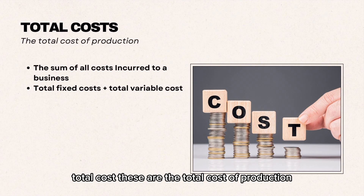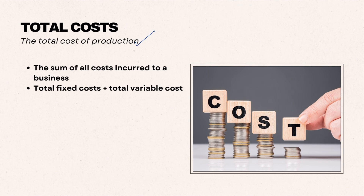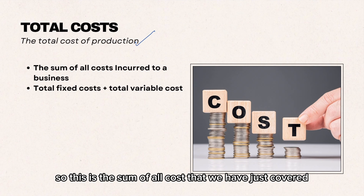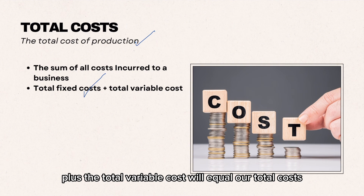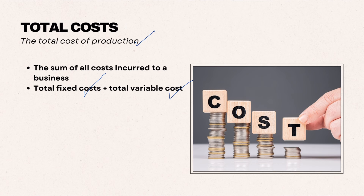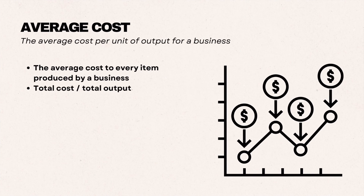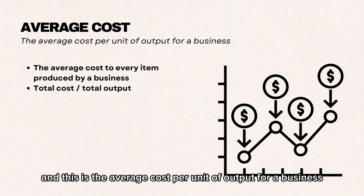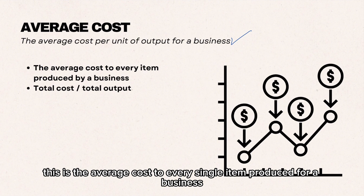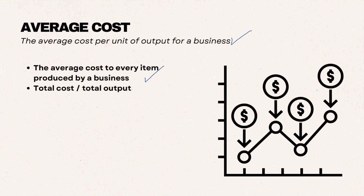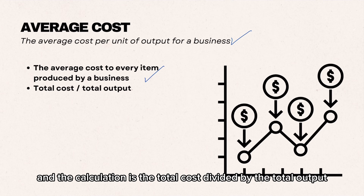Total costs are the total costs of production — the sum of all costs we have covered. Total fixed costs plus total variable costs equals total costs. Our next term is average cost, which is the average cost per unit of output for a business. The calculation is total cost divided by total output.